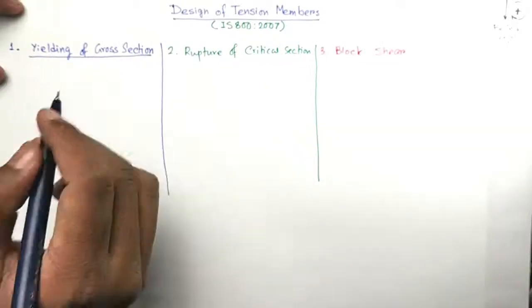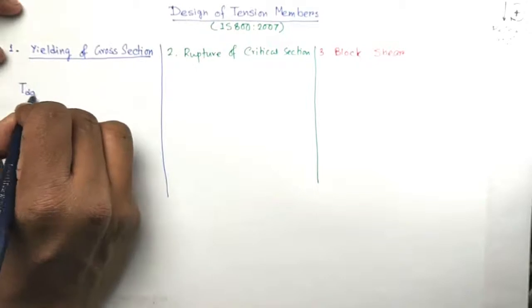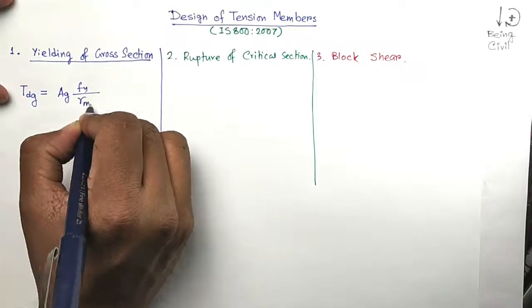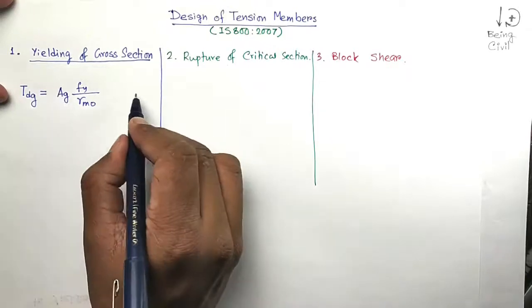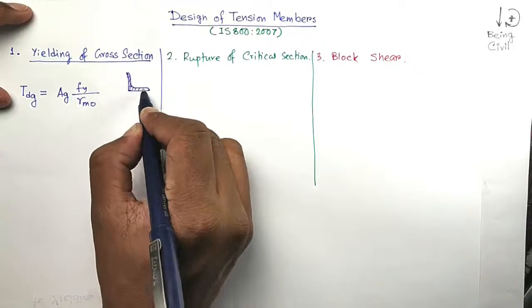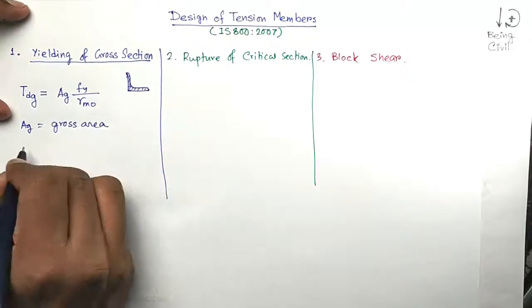Here, the design strength due to the yielding of gross section is denoted by TDG, which equals AG×FY / γM0. AG is the full section area. Suppose you have one angle section like this, AG is the full area of this angle section. So AG equals the cross area of the section.